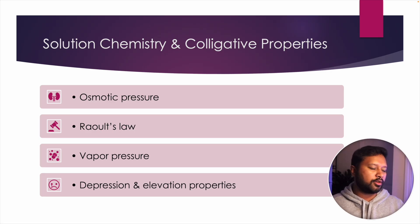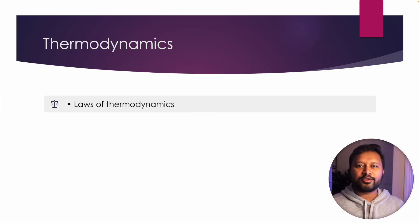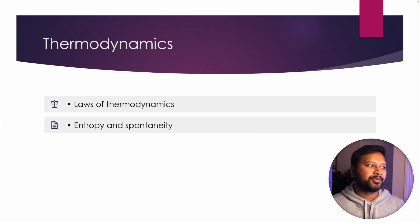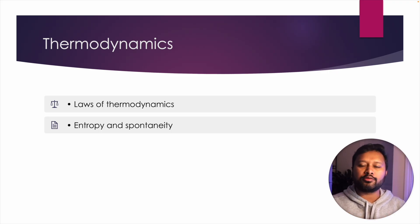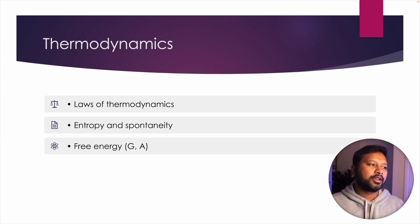Next comes thermodynamics — the largest chapter of physical chemistry. You have to study the laws of thermodynamics, derive equations, and solve numericals based on all the laws. There are also thermodynamic equations of state to cover. Then comes spontaneity and entropy: how entropy is defined by the second law of thermodynamics, how it relates to randomness, and how it relates to the number of microstates. It's not a big topic but very important and can be asked in a confusing manner in the exam.